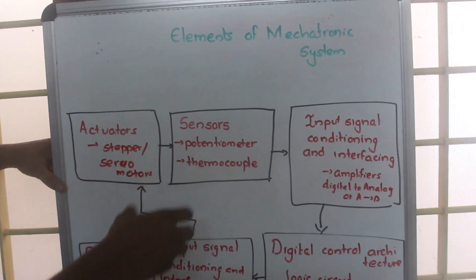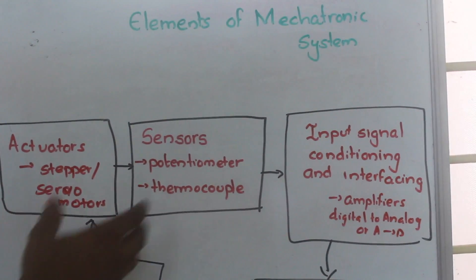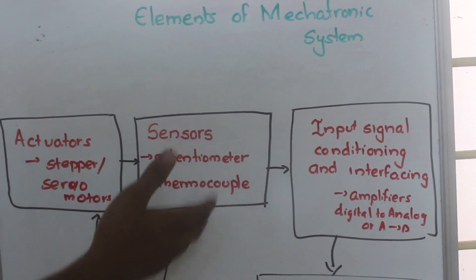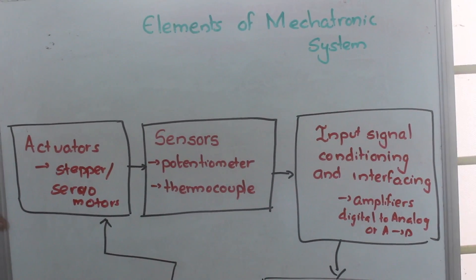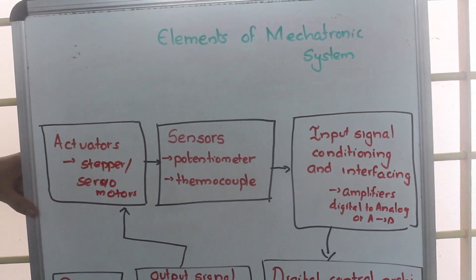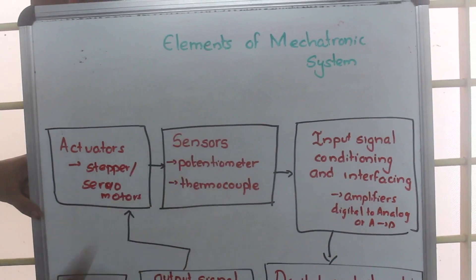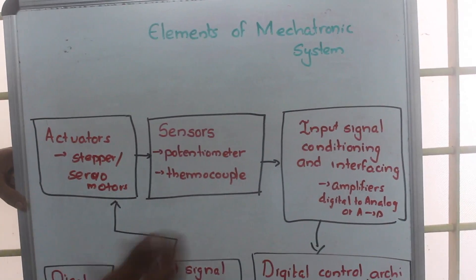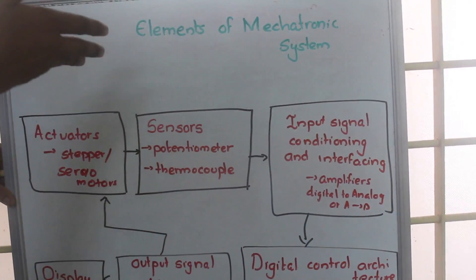A sensor senses the change in the environment. We can sense the change by potentiometer or thermocouple. Suppose there is a change in temperature, we can identify it by thermocouple, or if there is a displacement, we can identify it by potentiometer.